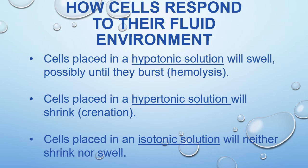Different solutions are going to cause different processes to occur within the cells themselves. With an isotonic solution, we're going to get movement of water neither into the cell nor out of the cell — our cell is going to have essentially equal water coming in as going out. A cell in a hypertonic solution is going to have unequal movement of water: the water going out of the cell is going to be great, while the water coming into the cell is going to be relatively minor.